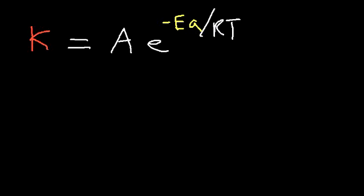So what do these variables mean? A is the frequency factor. A is equal to Z times P, where Z is the collision frequency and P is the steric factor. But for the most part, for a typical chemical kinetics question, you really don't have to worry about A, Z, or P.